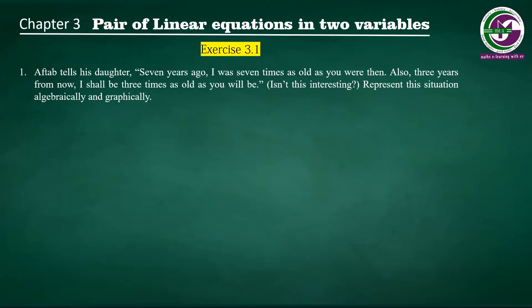The first question: Aftab tells his daughter, '7 years ago, I was 7 times as old as you were then. Also, 3 years from now, I shall be 3 times as old as you will be.' Represent this situation algebraically and graphically.